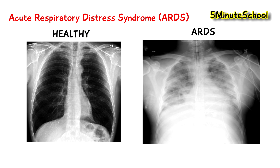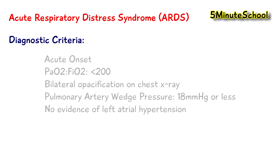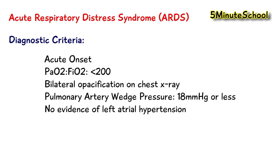For the official diagnostic criteria for acute respiratory distress syndrome, it needs to be an acute onset — so it has to happen very rapidly. The ratio of partial pressure of oxygen to fraction of inspired oxygen, PaO2 to FiO2, has to be 200 or less. The x-ray needs to show bilateral whiteness or opacification, and pulmonary artery wedge pressure needs to be 18 millimeters of mercury or less when measured. There also has to be no evidence of left atrial hypertension.